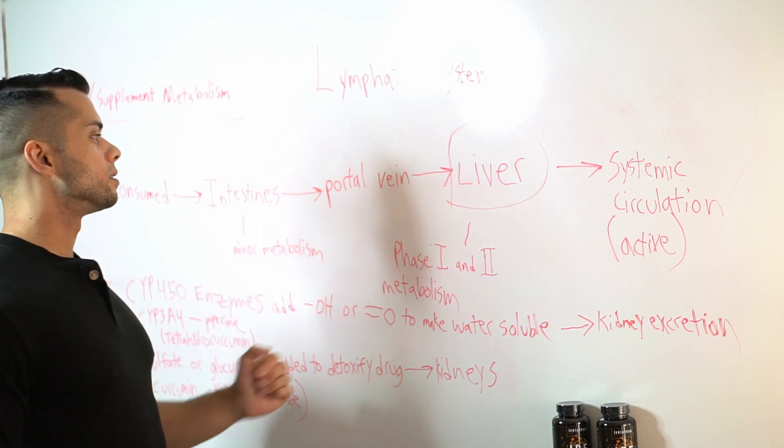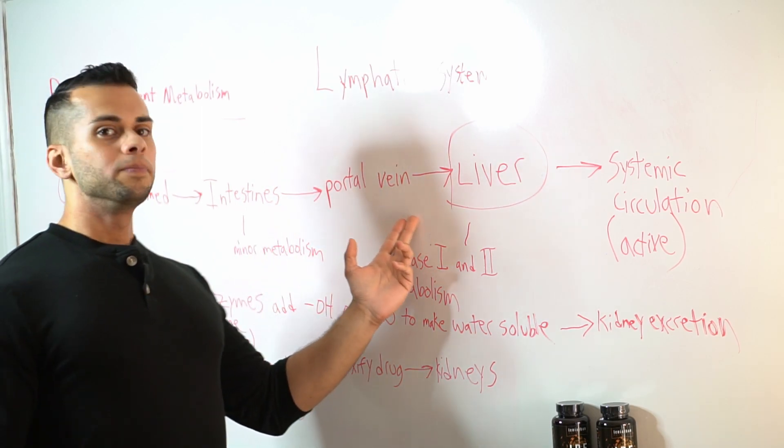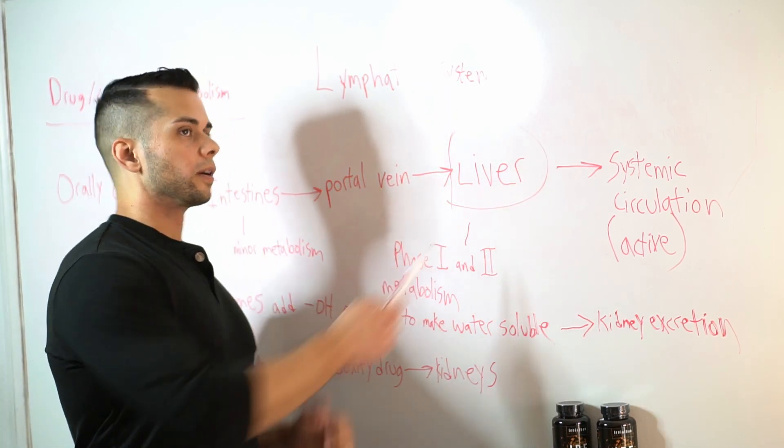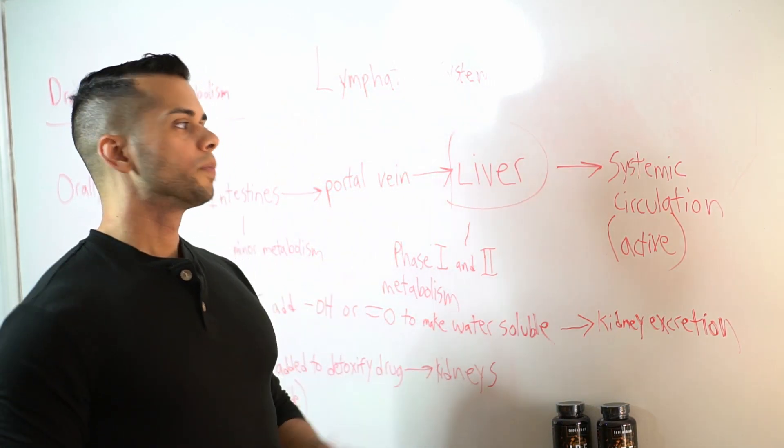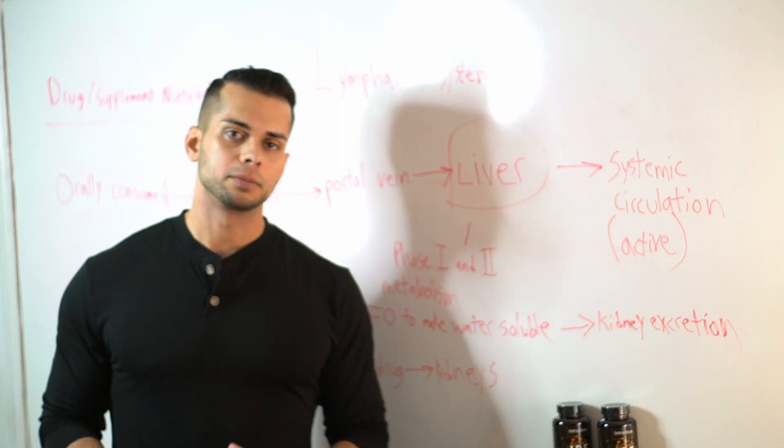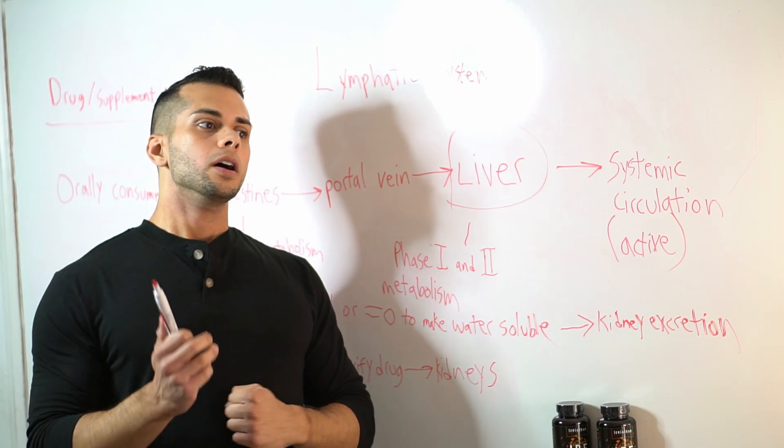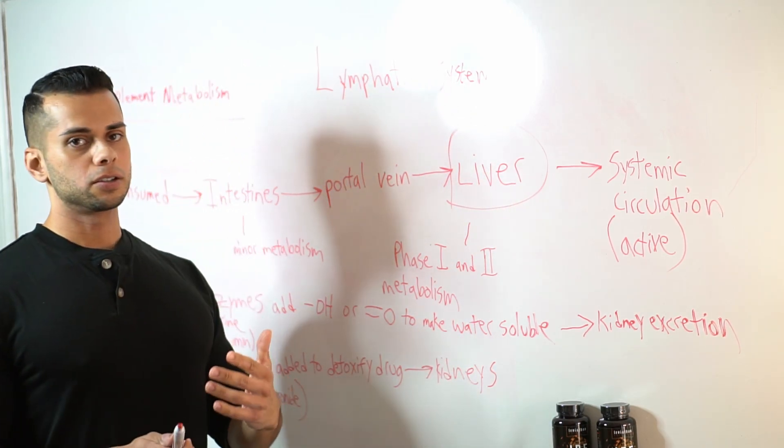And then from the intestines, it enters the portal vein. And from there, the dietary supplement goes through the liver. And now in this liver, we have major metabolism occurring. The liver is responsible for breaking down all drugs and/or supplements that the body is consuming.